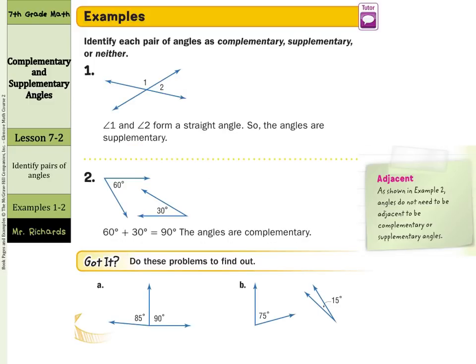Now in our first examples, we need to identify each pair of angles as complementary, supplementary, or neither. In example 1, angle 1 and angle 2 form a straight angle. We have angle 1 here and angle 2 here, and together they form this straight angle. So the angles are supplementary.